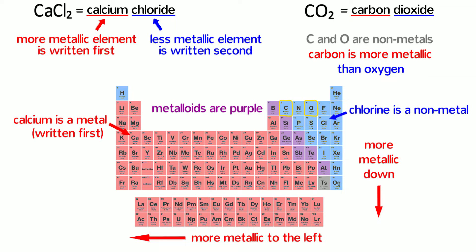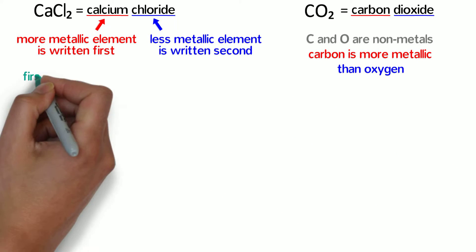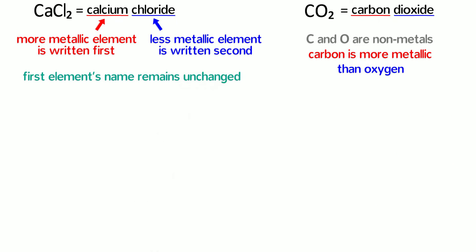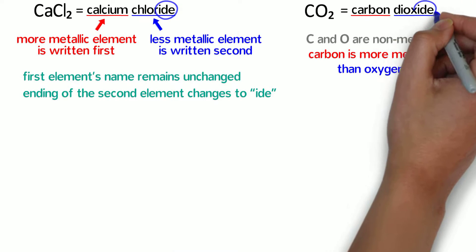There are a few other things we should learn from our examples. First, the first element's name remains unchanged while the ending of the second element changes to -ide. This is true for both ionic and covalent compounds. We can see that calcium and carbon are the same, but chlorine changed to chloride and oxygen changed to oxide.